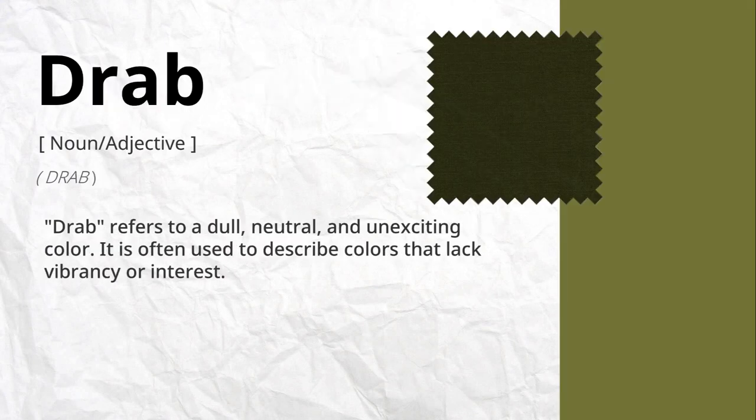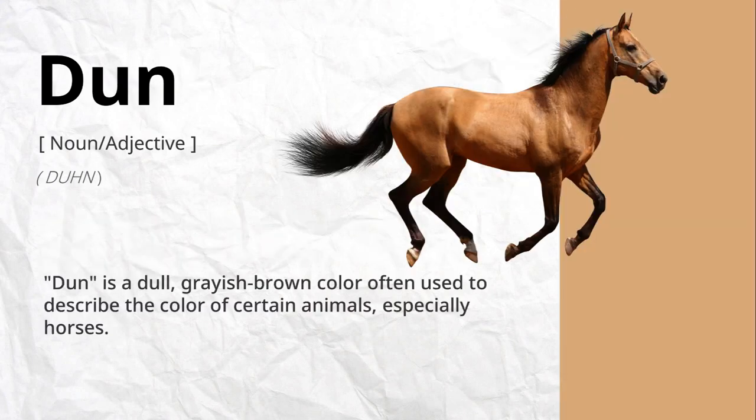Drab refers to a dull, neutral, and unexciting color. It is often used to describe colors that lack vibrancy or interest. Dun is a dull, grayish-brown color often used to describe the color of certain animals, especially horses.